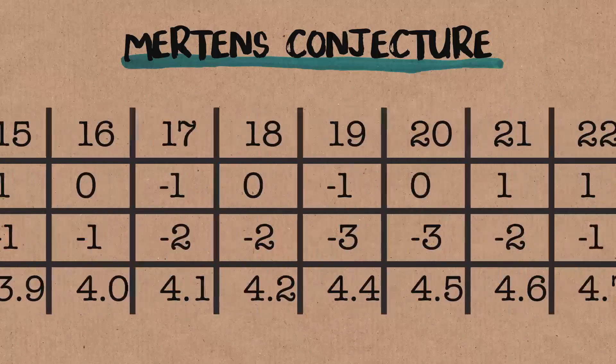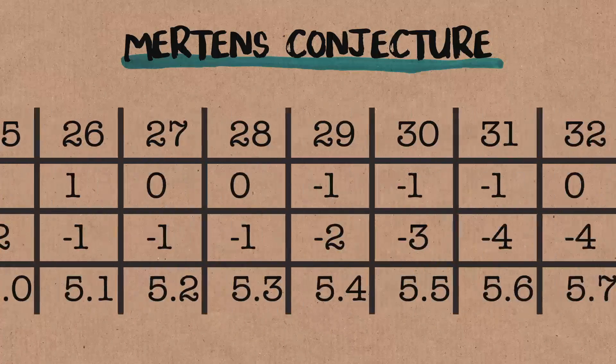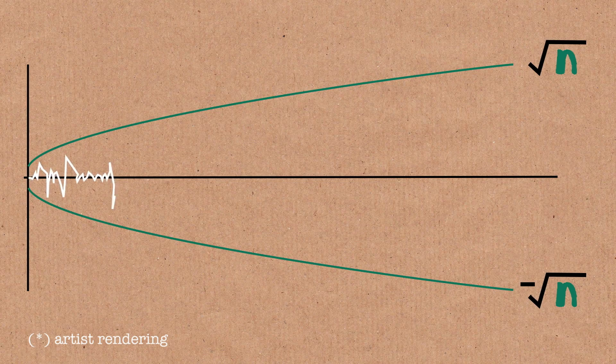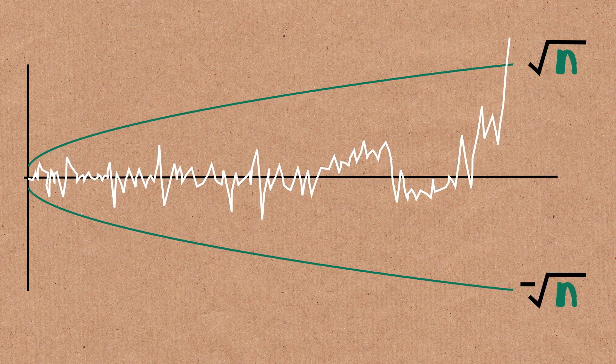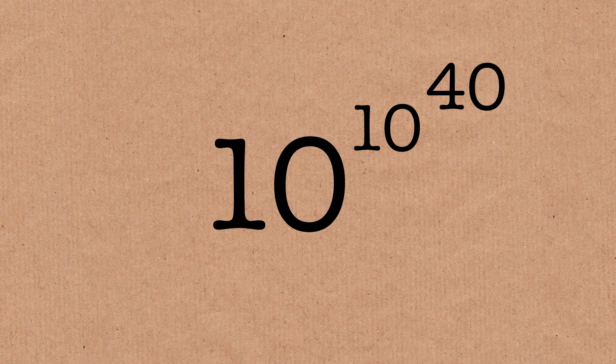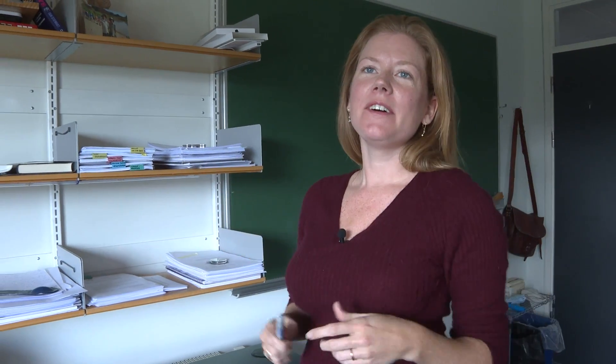Mertens conjecture was thought to be true for a long time, but it turns out it's not true. We can now compute really far out — billions and billions of numbers — and it still satisfies the square root bound. But what is known is that there is a counterexample: you eventually zigzag out past the square root of the number. The bound on how big the number has to be is terrible — something like 10 to the 10 to the 40. We don't know the exact number where it first breaks the rule — we could never write it down, we would need all the atoms in the universe. But we know it exists.